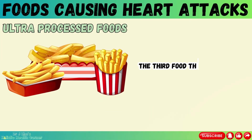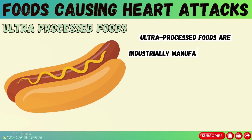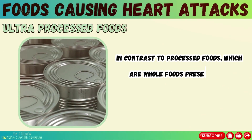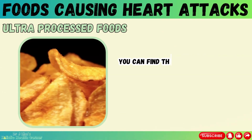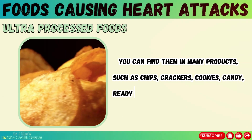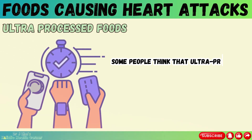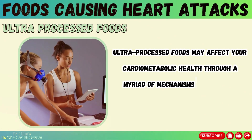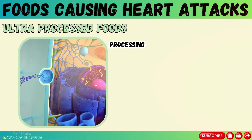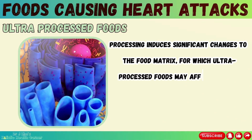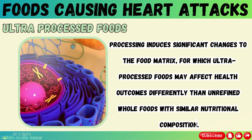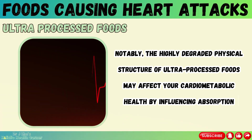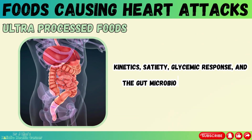The third food that you should avoid is ultra-processed foods. Ultra-processed foods are industrially manufactured ready-to-eat or ready-to-heat formulations containing food additives and little or no whole foods, in contrast to processed foods preserved by traditional techniques such as canning or pickling. You can find them in products such as chips, crackers, cookies, candy, ready meals, soft drinks, and ice cream. Ultra-processed foods may affect your cardiometabolic health through a myriad of mechanisms beyond traditionally recognized individual nutrients. Processing induces significant changes to the food matrix, influencing absorption kinetics, satiety, glycemic response, and gut microbiota composition and function.